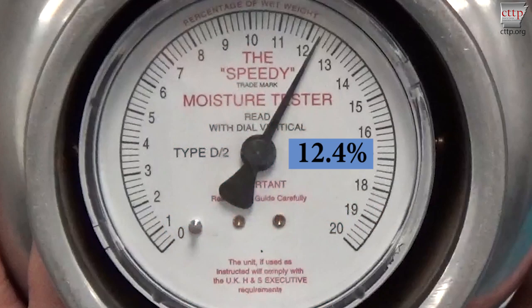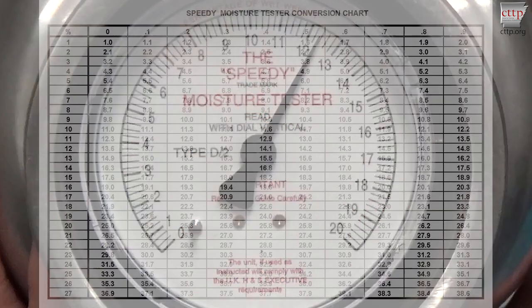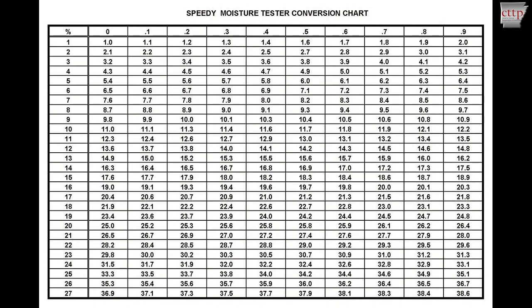Record the final reading. The dial reading represents the percent moisture based on the wet mass of soil placed into the meter. However, reported moisture content is based on the dry mass of soil.